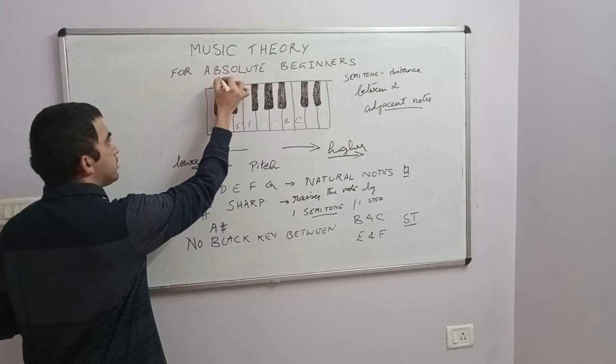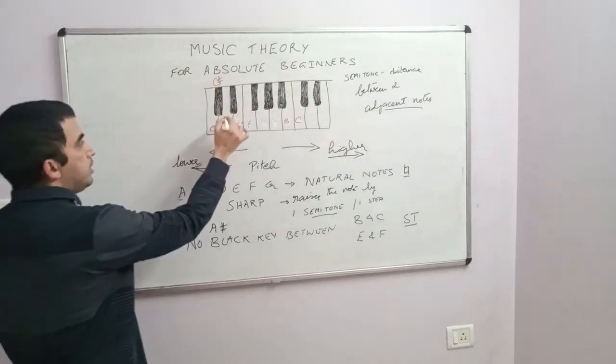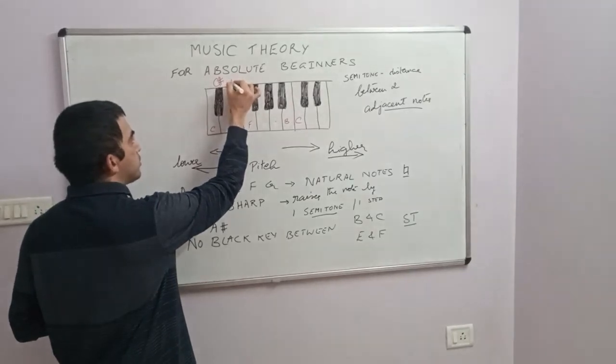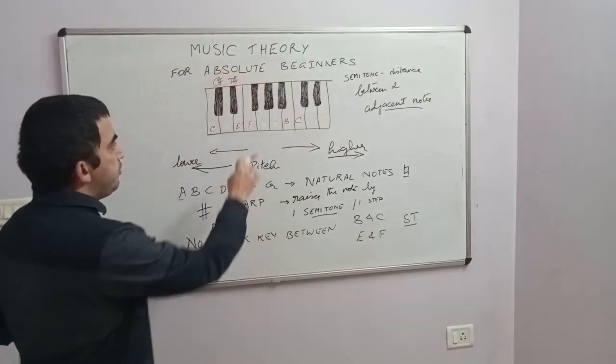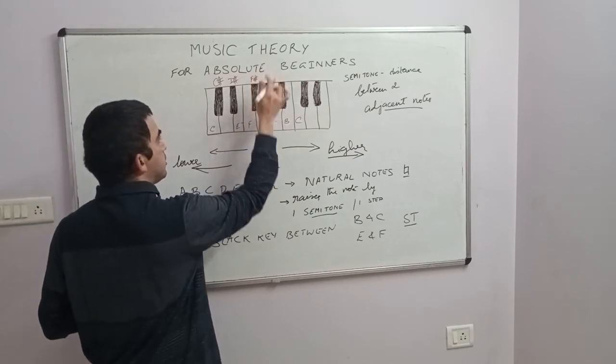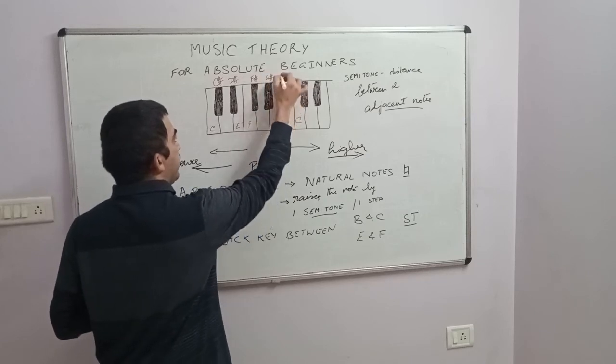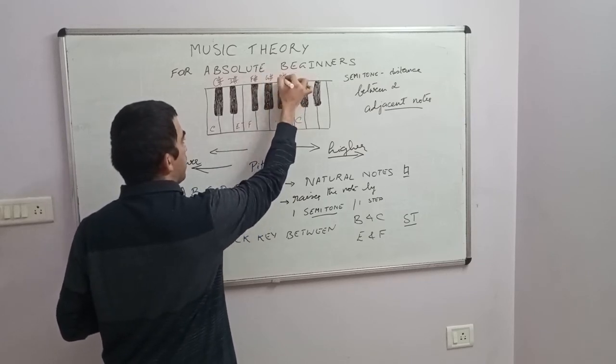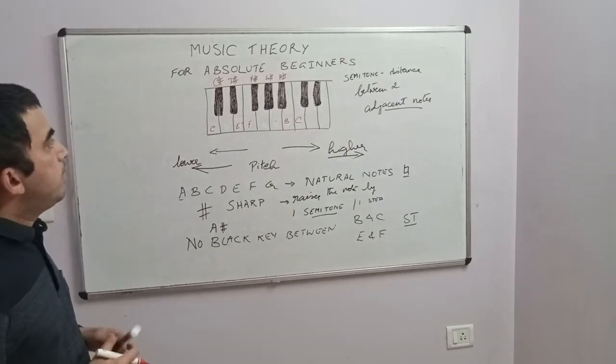If you apply that logic: C, the black key becomes C sharp. D, the black key next to the D note becomes D sharp. Same way, F becomes F sharp, G becomes G sharp, A becomes A sharp.